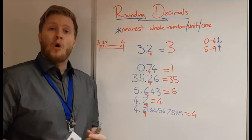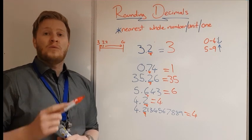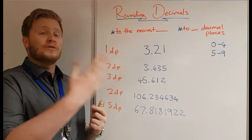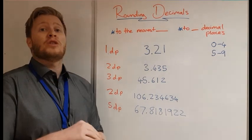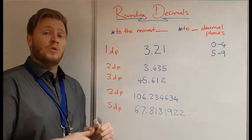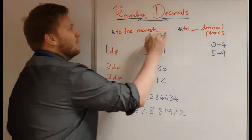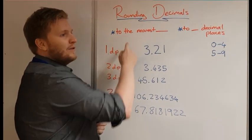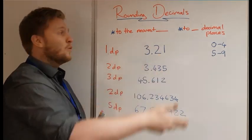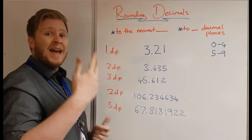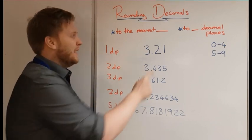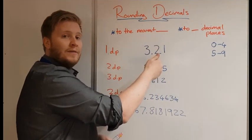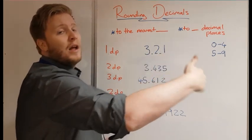Now I'm going to show you how to round to different decimal places — to the nearest tenth, hundredth, thousandth, and so on. The same rules apply. 'To the nearest tenth' and 'to one decimal place' mean the same thing. One decimal place means one number after the decimal point; two decimal places means two numbers, and so on. Once you've seen the rule, you should be able to apply it no matter what.